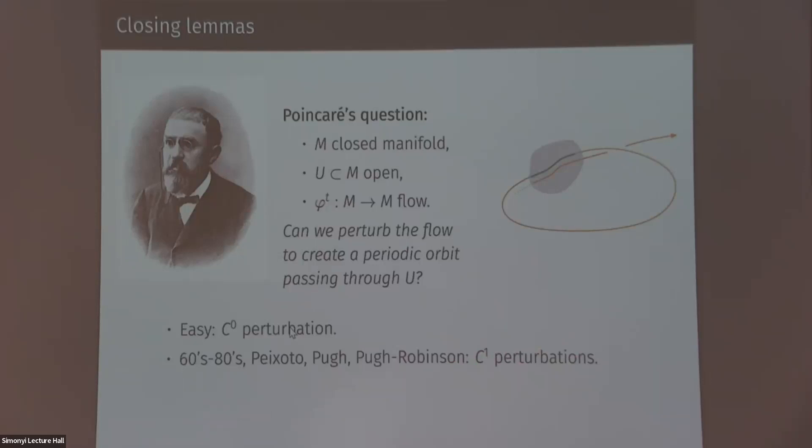Now you can ask, what about C^k for larger k? Well, there is a surprising counterexample by Herman from 1991 that tells you that you cannot do it with C infinity perturbations. That's actually C^k for k large enough. So you cannot close up orbits with high regularity perturbations. And these examples, they exist in any dimension from four and up.